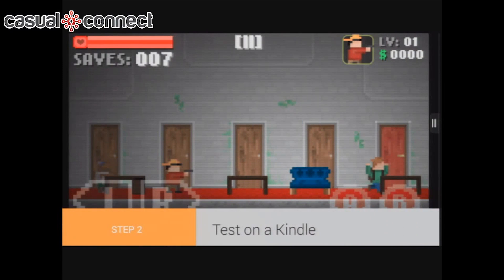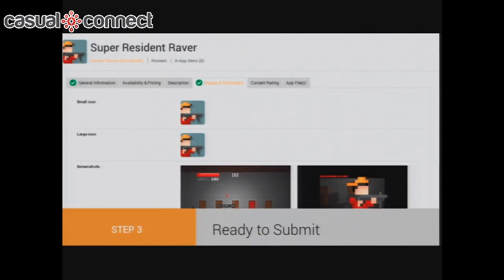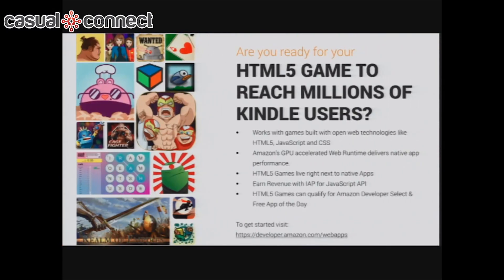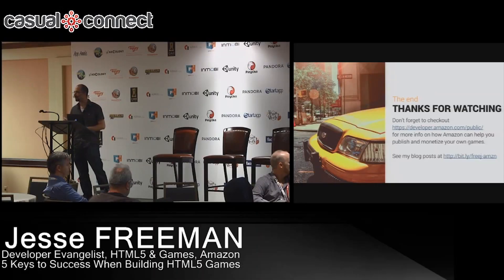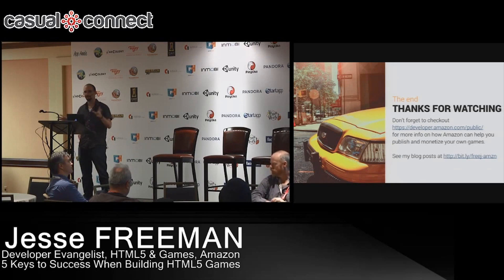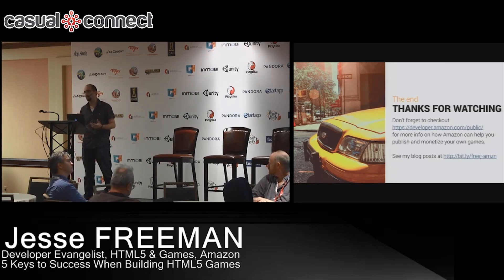Once you test it out, it looks like any other native app. I already have controls planned for mobile, so my game shows up with proper controls. When you're ready to submit, you fill out all the basic metadata you normally would, but instead of uploading a zip, you simply put in your URL. For more information, visit developer.amazon.com/web-app. We support WebGL and have optimized the web renderer so it runs incredibly fast. We also support Cordova, so if you're already using Cordova to publish your apps and games, you can take advantage of our web app tools and the optimized web view.